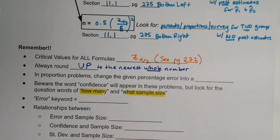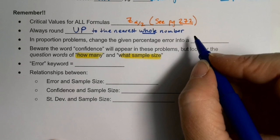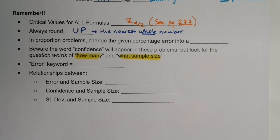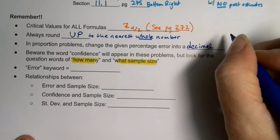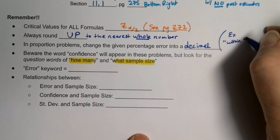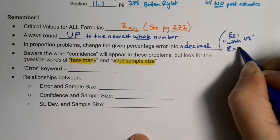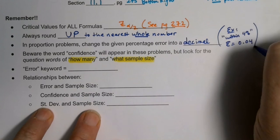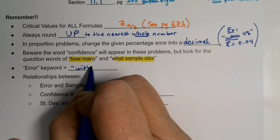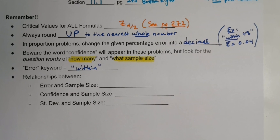In proportion problems — four out of five of these — it's very common for the error to be given as a percentage. If that happens, just turn it into a decimal. For example, if they say 'within four percent,' the error you use in the formula is 0.04. The word 'within' frequently indicates the error — within how much accuracy do you want — so that word will cue you.